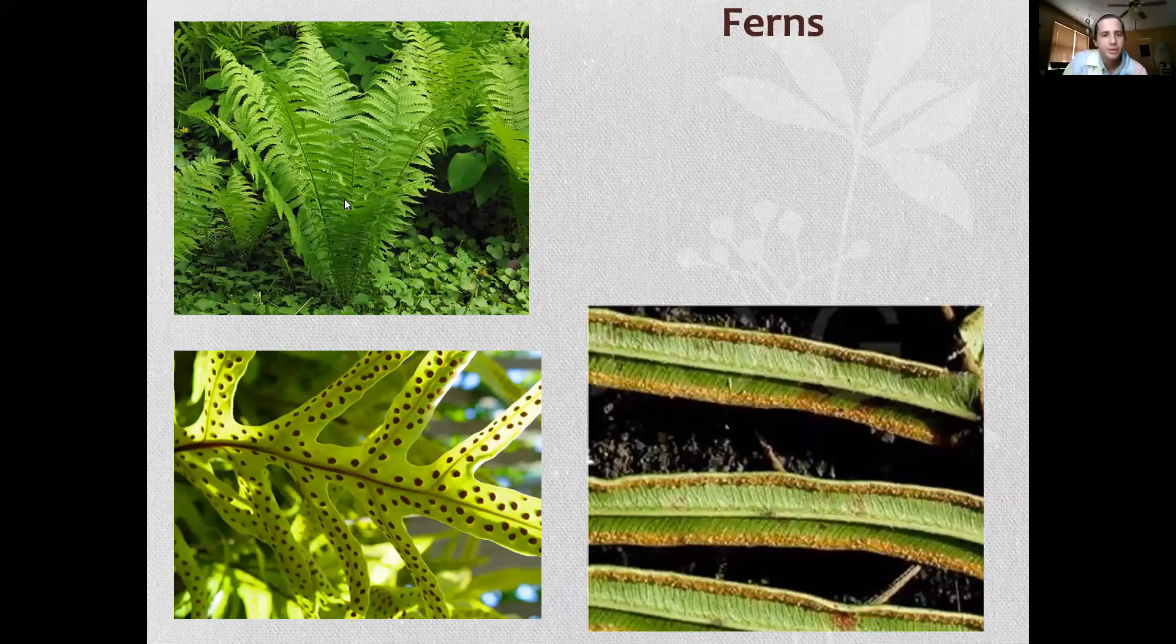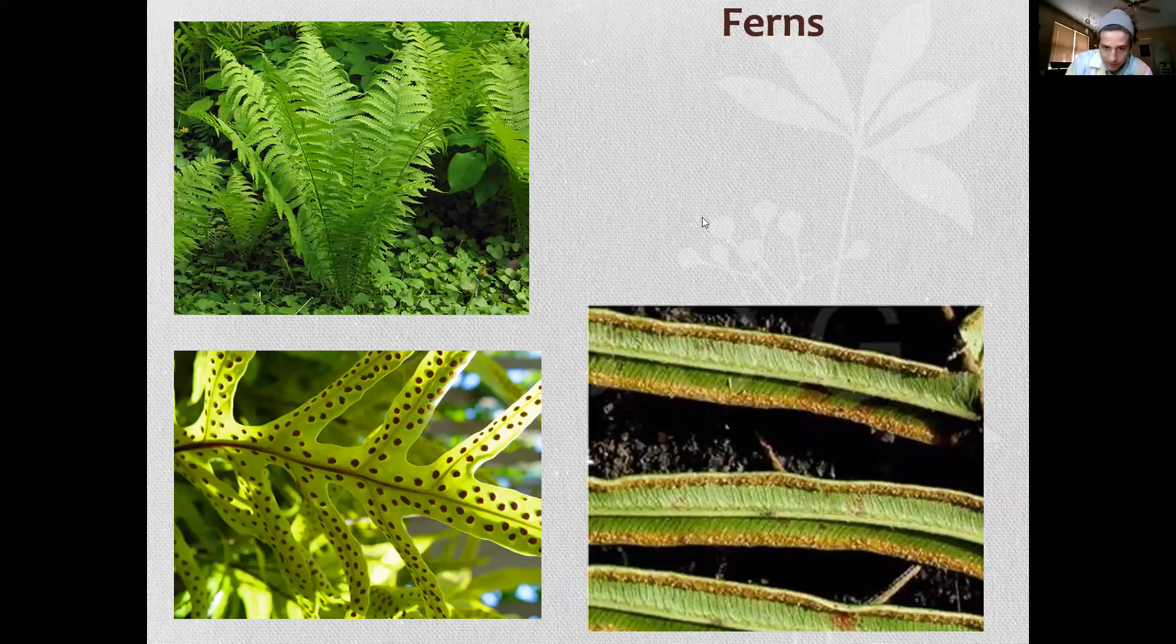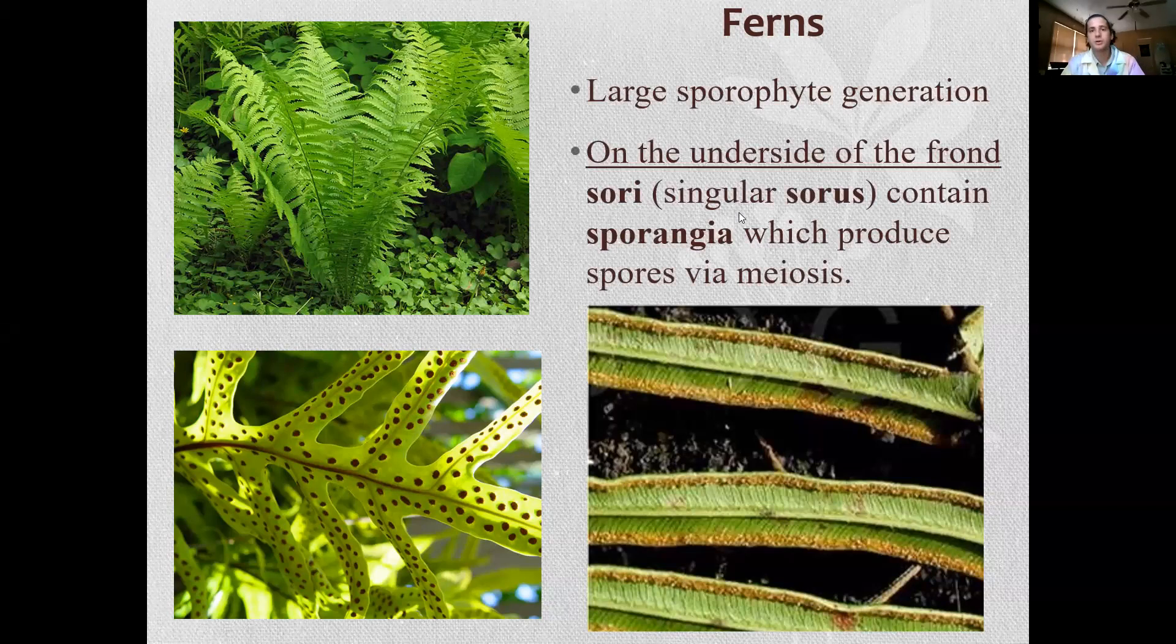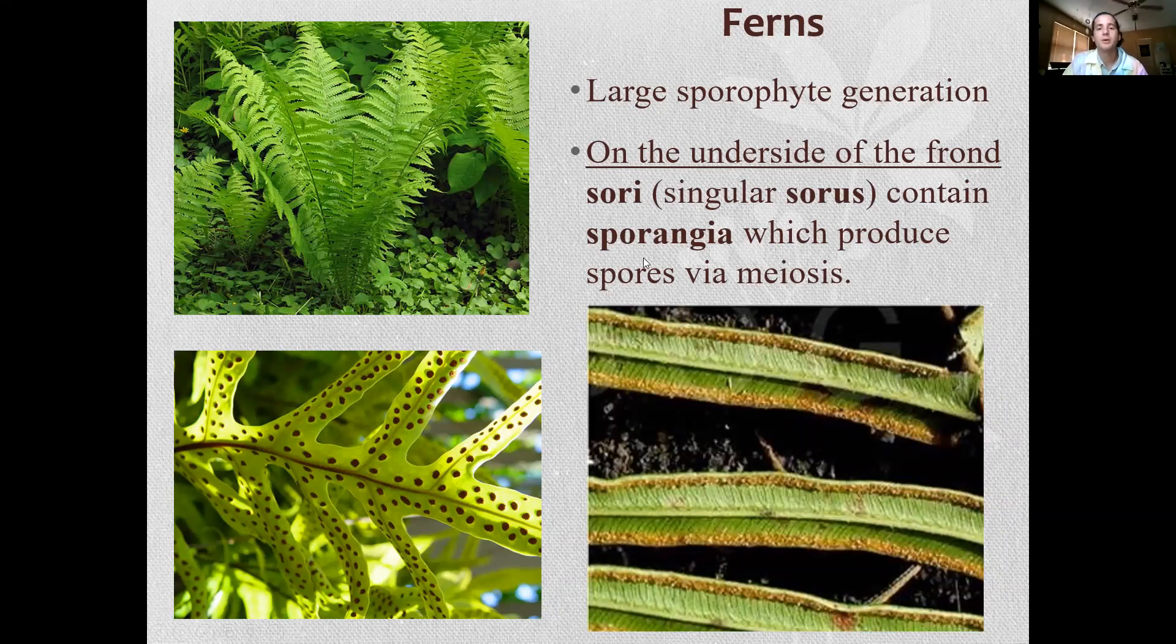So ferns. Here is our mature sporophyte. On the underside, the frond, the sori, singular sorus, contain the sporangia which are going to produce spores via meiosis. So these dark structures are the sori, or a single one would be a sorus. On them they will produce little tiny balls on stalks. They are clusters of little tiny balls on stalks which are covered with spores.